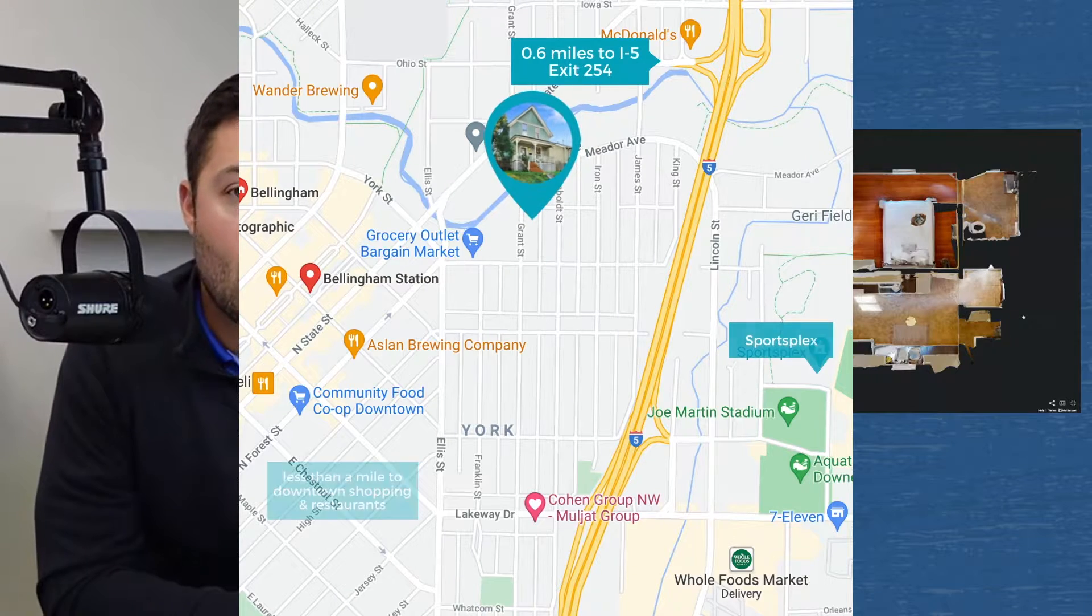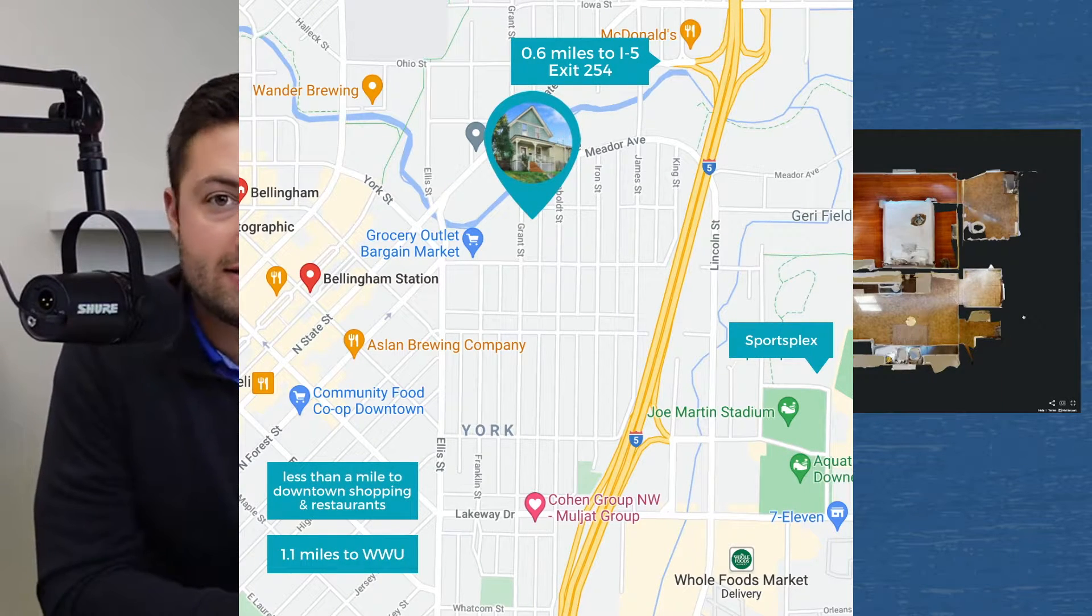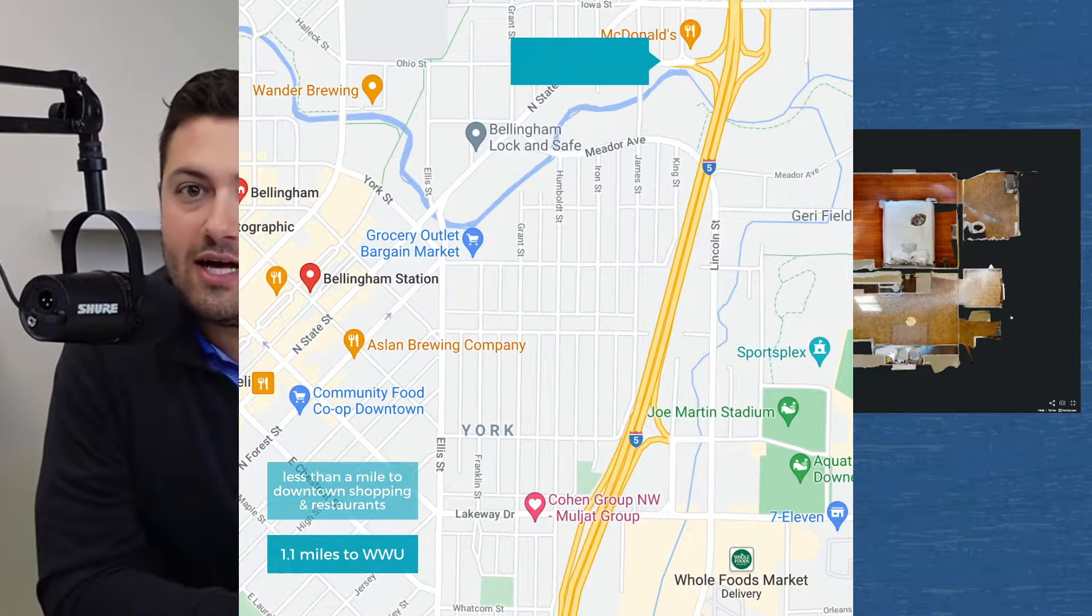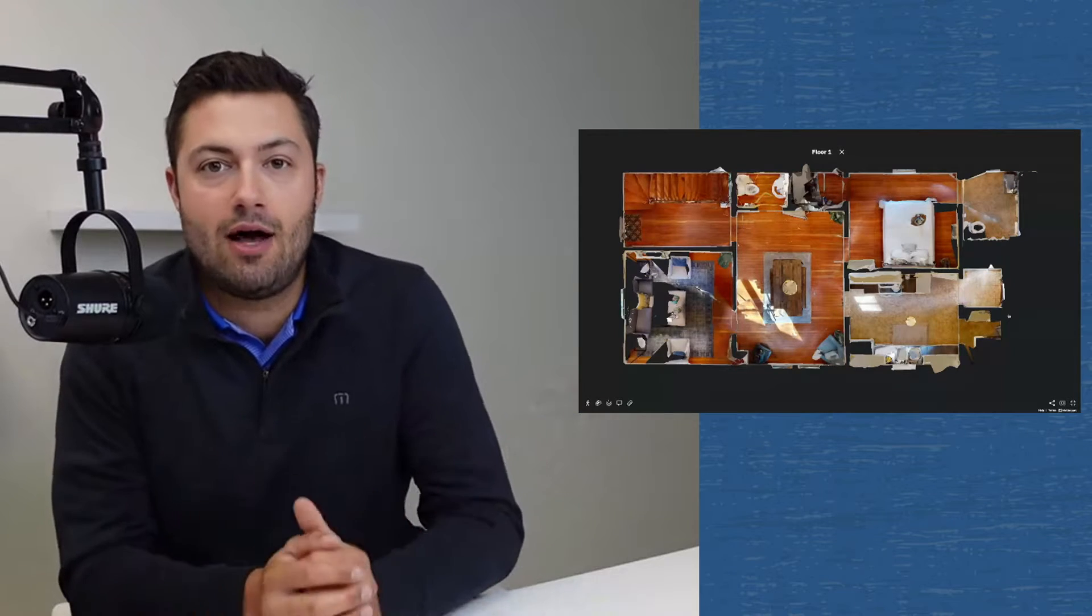We're talking about Core Bellingham, good access to I-5, close to downtown, close to shopping, amenities, walkable, trails. I mean everything that's Bellingham, that's this house. Let's jump right in.